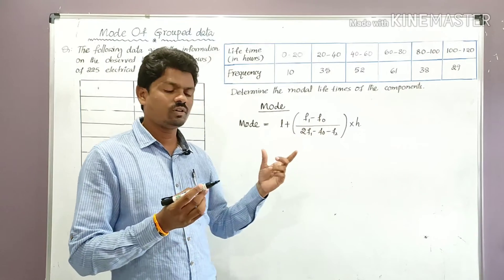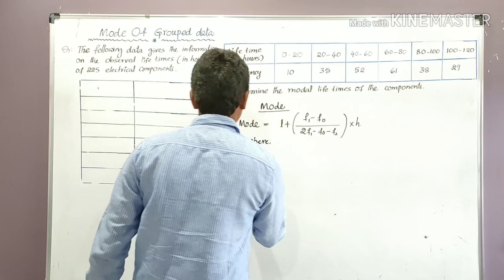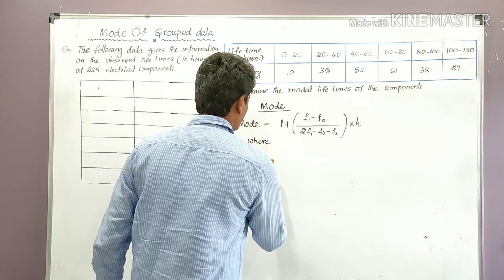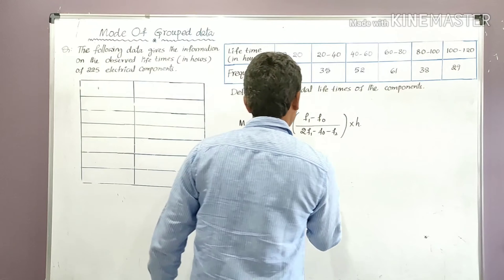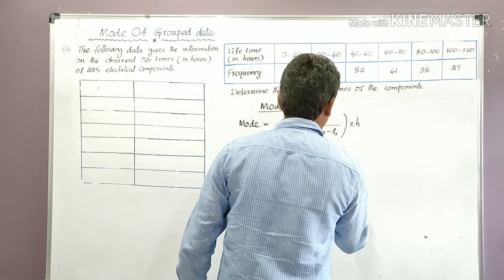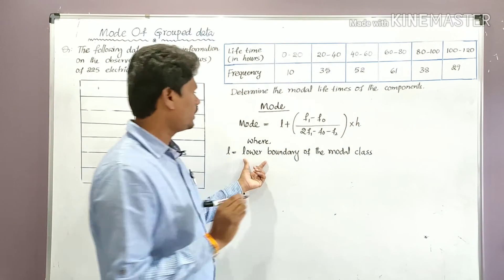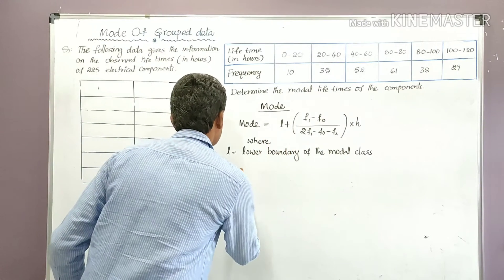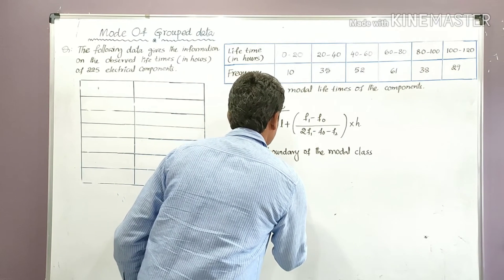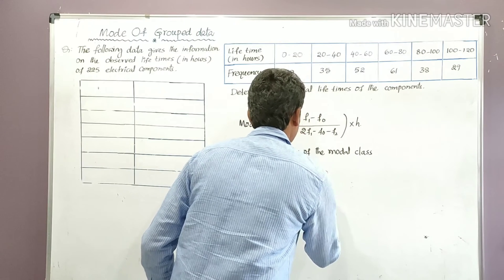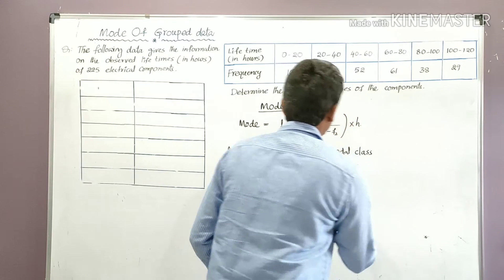Here, L is equal to the lower boundary of the modal class. F1 is equal to the frequency of the modal class.